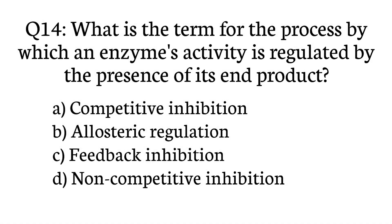Question number 14. What is the term for the process by which an enzyme's activity is regulated by the presence of its end product? The correct option is option C: feedback inhibition.